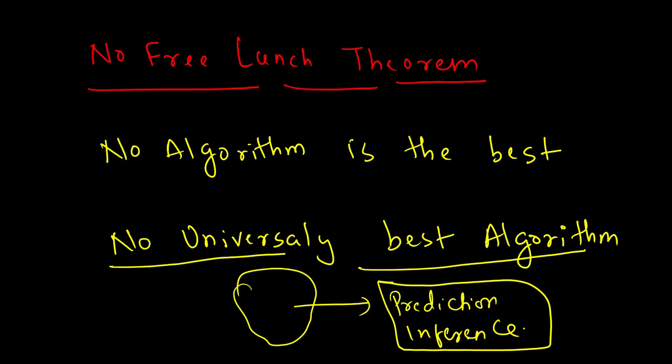So, the prediction and inference that we find out from machine learning or statistical research is always probabilistic, not certain type. Okay, it's not something completely certain. It's not 100% true. It is probabilistic in nature. That means, the chances of its correctness lies between 0 to 100%.